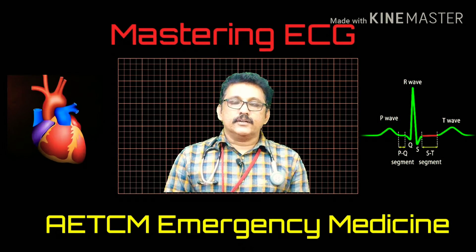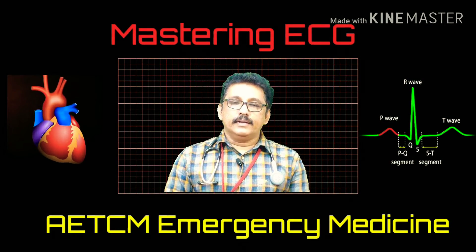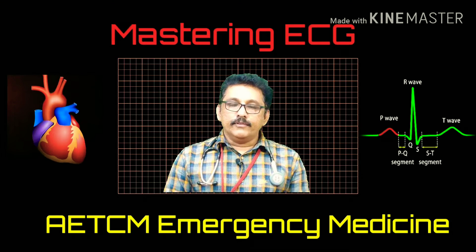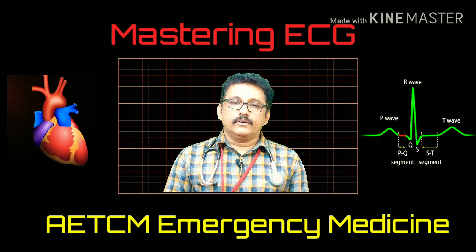In a normal person also you can get very tall T-waves — this is a normal variant ECG. The patient is absolutely normal: no renal failure, no chest pain, but when we took an ECG, you can see very tall T-waves in V2, V3, V4, V5. In a thin individual with no chest pain and no renal failure, if you see very tall T-waves, suspect it is a normal variant. No further investigation is required, but you can repeat an ECG after half an hour. If there are no new changes, the patient can be discharged.